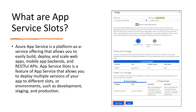Azure App Services is a platform as a service offering by Microsoft Azure which helps us to easily build, deploy and scale web apps, mobile app backends and RESTful APIs. An app service slot is a feature of App Service that allows us to deploy multiple versions of an app to different slots.